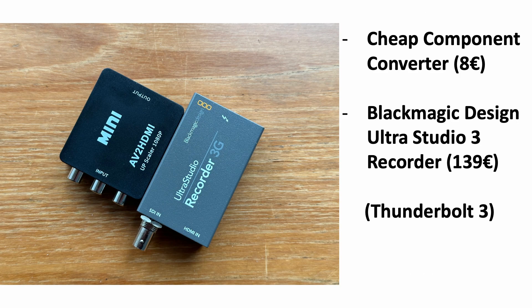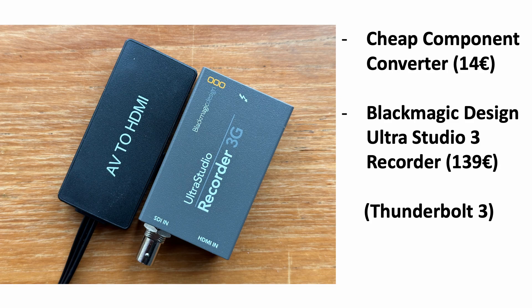Choice number two was a cheap component converter, and as a capture card I used the Blackmagic Design Ultra Studio 3 recorder, which is a Thunderbolt 3 device. Here I didn't have any problems with Intel or M1 and M2 Macs.